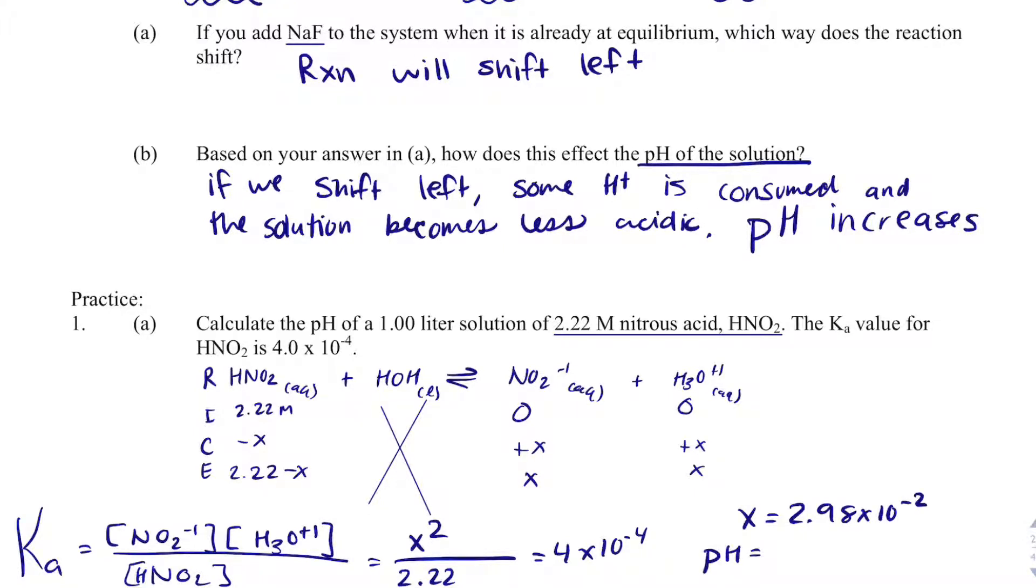If I take the pH of that, pH equals negative log H+. So pH equals negative log 2.98 times 10 to the minus 2. And I know when I take the negative log of that, the pH will be a little bit less than 2, and it is at 1.53.